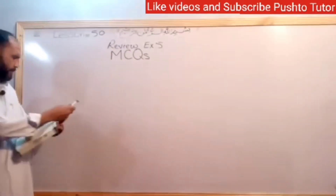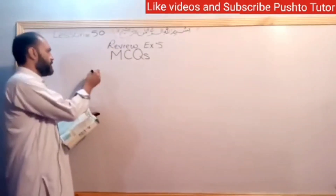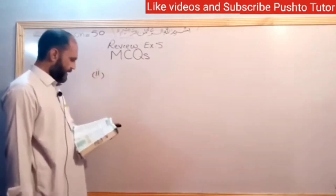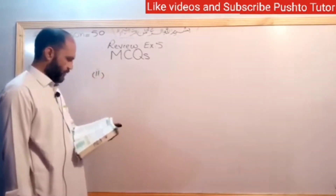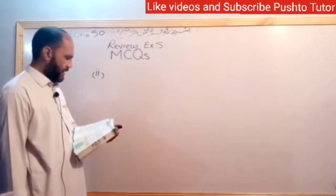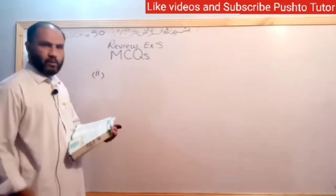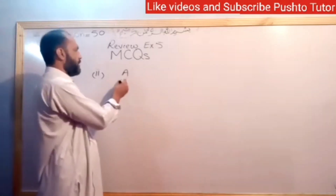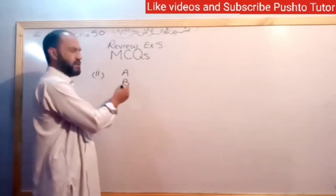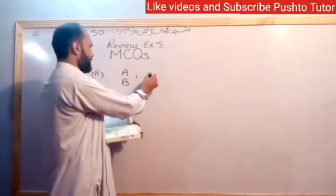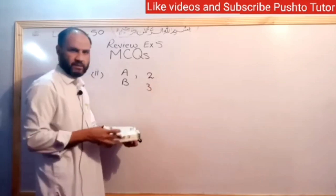Question number 2: If A has two elements and B has three elements, then the number of binary relations in A cross B is — we check the A set has 2 elements and the B set has 3 elements.